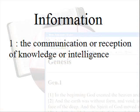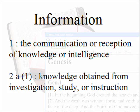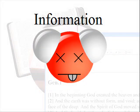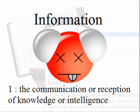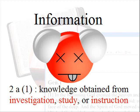Information is the communication or reception of knowledge or intelligence, or knowledge obtained from investigation, study, or instruction. One stumbling block for materialism and evolutionism is that matter has no consciousness. It is not a thinking entity, and therefore cannot produce information. The communication or reception of knowledge or intelligence cannot come from matter alone. Matter has no knowledge, no mind, no intelligence, nor does it study, investigate, or instruct without the presence of mind.